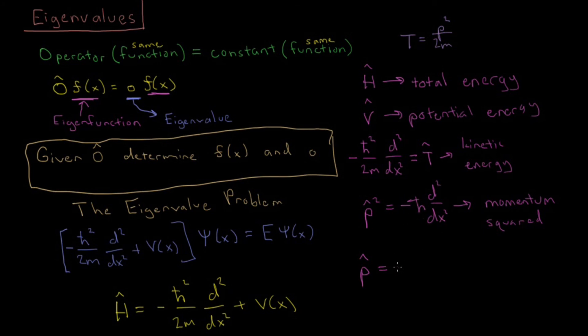And you should be able to convince yourself that the square root of this is i, the square root of -1, because we have a minus sign there, times h-bar times the first derivative with respect to x. And this is going to be our momentum operator.